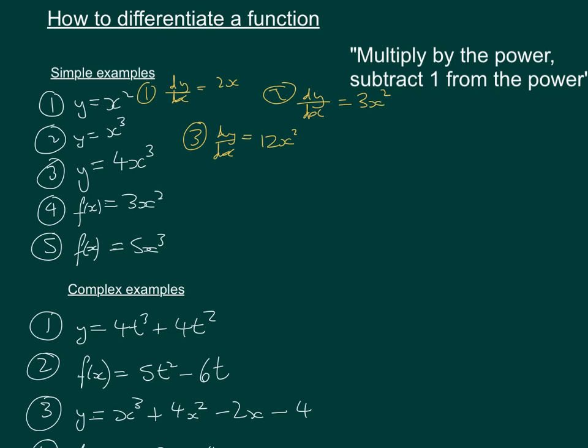So those ones were in the kind of normal form that most people would be used to. So y equals a certain function. This is f(x) notation, so the function of x is 3x squared. So there's no difference in what we do. The only difference is how we would write the differential. So rather than writing dy by dx,